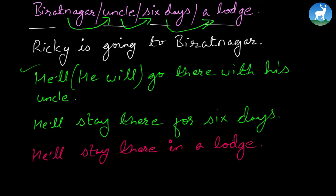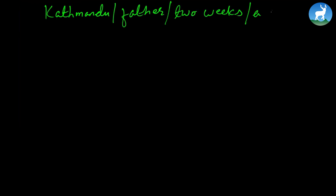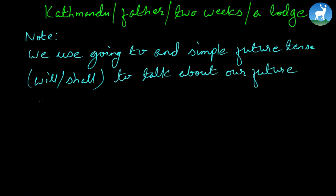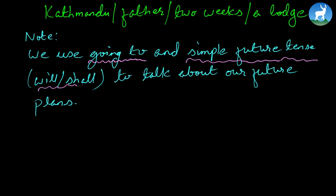You can do this one as homework. The question is: Kathmandu — capital city of Nepal — father, two weeks, a lodge. You follow the same pattern. And here's a note: we use 'going to' and simple future tense — which generally means 'will' or 'shall' — to talk about our future plans. So if 'going to' is related to a future plan, that is future tense.